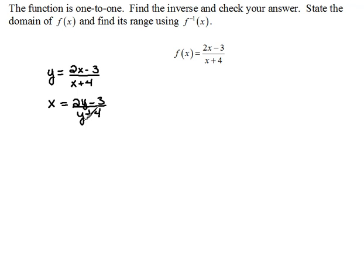Now this is the inverse, but we're actually going to finish cleaning it up and put it in the proper form. So I'm going to multiply both sides by y plus 4 to get rid of it in that denominator. And then distributing our x, we get xy plus 4x equals 2y minus 3.